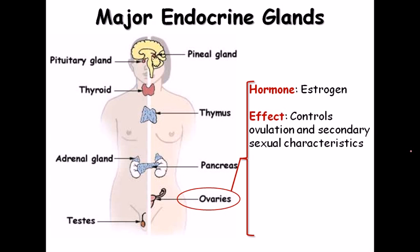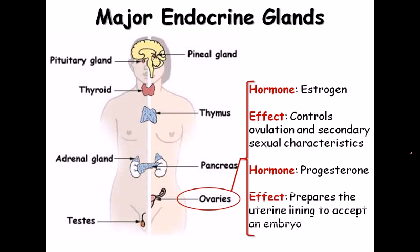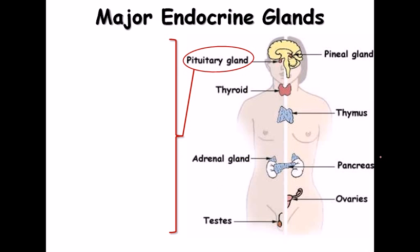The ovary produces estrogen, which controls ovulation and secondary sexual characteristics in females. It also produces progesterone, which prepares the uterine lining to accept an embryo during implantation, supports final development of the embryo, and ultimately facilitates the release of the mature embryo.